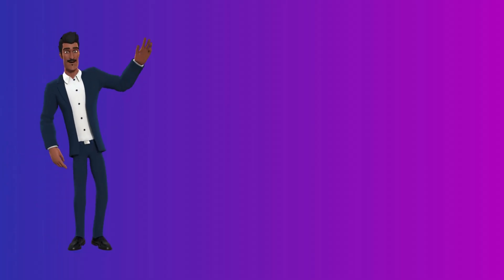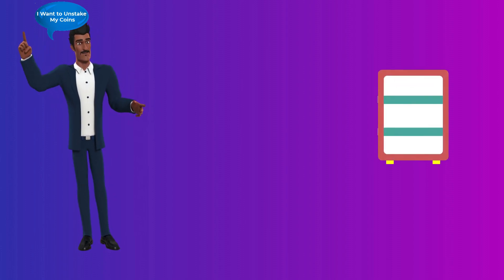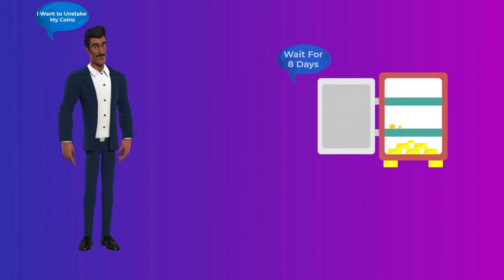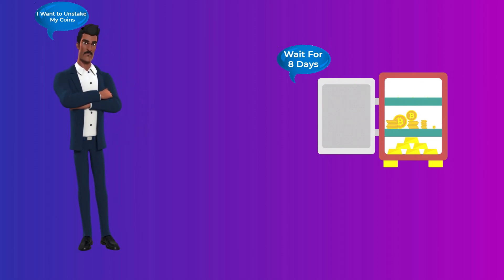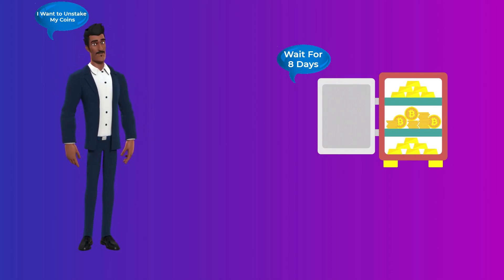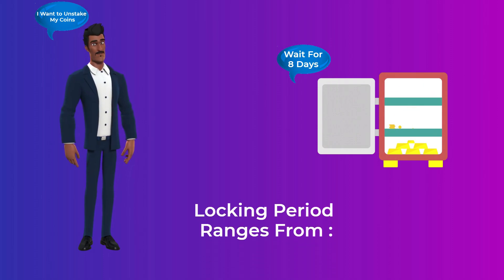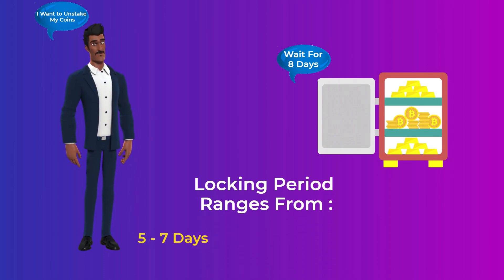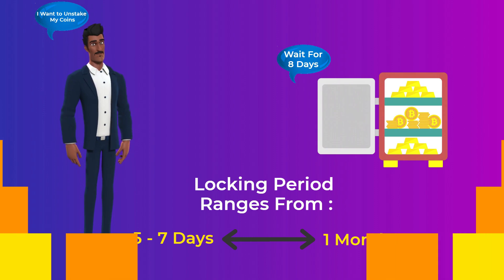You should know that if after a while you want to unstake your coins and withdraw your money plus the rewards, you won't be able to withdraw it immediately. Your money will be locked for a while so the network can still penalize you if they detected something bad you did before unstaking your coins. This locking period may range from five to seven days, or it can go up to a month, depending on the network rules.